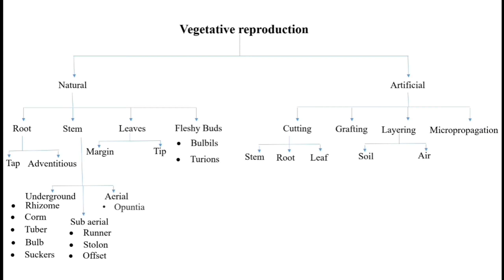Now, these somatic parts are stem, root, leaf, etc. When some somatic parts form new individuals, the first one is a structure of formation which we call buds. Buds are two types: nodal buds and adventitious buds.